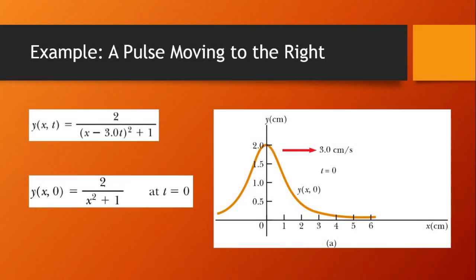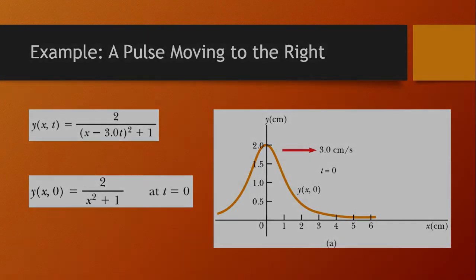Going to the solution, we can see that this function is of the form y equals f of (x minus vt). By inspection, we see that the wave speed is 3 centimeters per second. At time zero, when we put x minus 3t equal to zero, we get the maximum amplitude of 2 centimeters. Then we get the waveform by plotting the wave function at time zero.